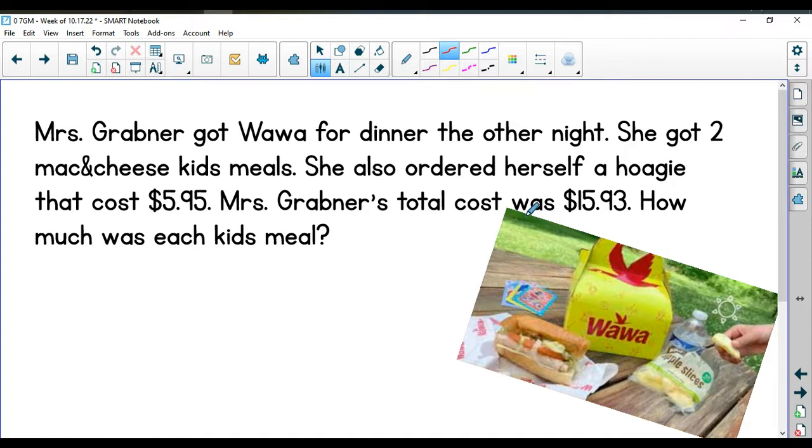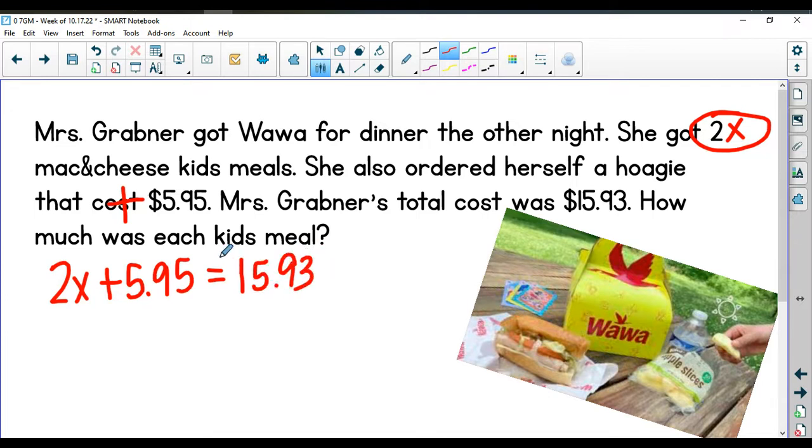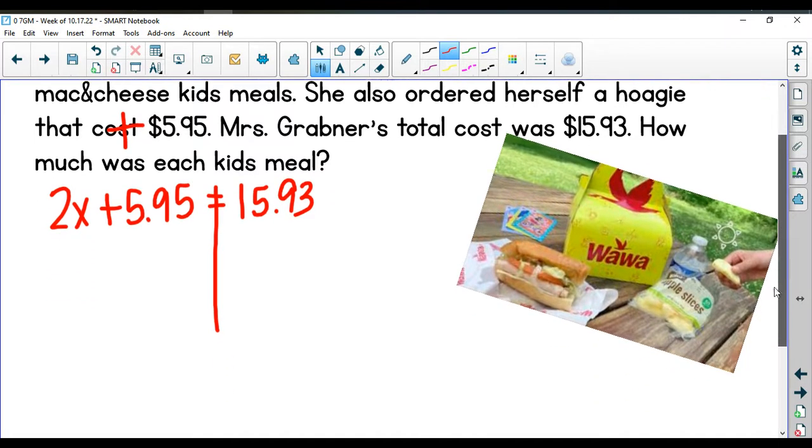So the first one, Mrs. Grabner got Wawa for dinner the other night. She got two mac and cheese kids' meals. She also ordered herself a hoagie that cost $5.95. Mrs. Grabner's total cost was $15.93. How much was each kids' meal? So the kids' meals are the ones that we're not sure about, and I know that I got two of those, so that two is going to get my x. I also got the hoagie, and that was $5.95, so I'm going to add those two things together to get my total. So the 2x plus the $5.95 hoagie is equal to my total, which was $15.93. Go ahead and solve this equation to figure out how much was each kids' meal.